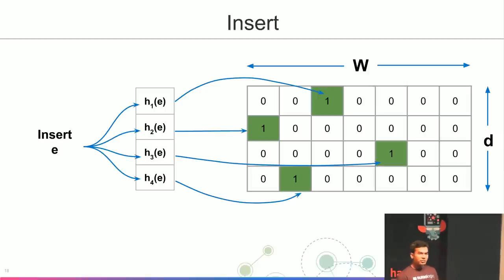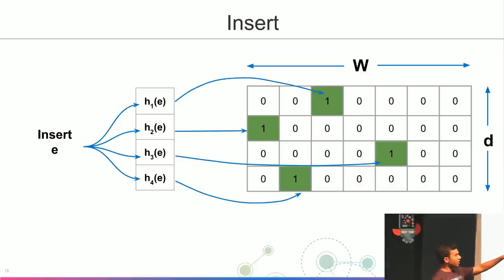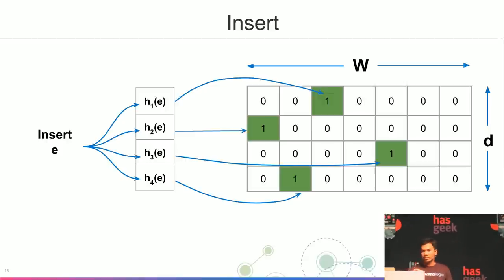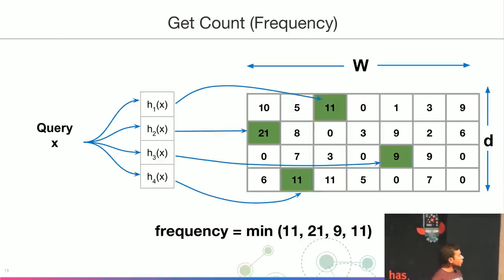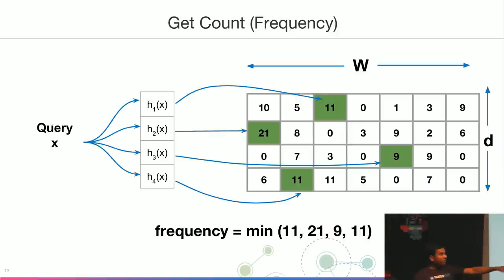For an insert operation, whenever we get element e from the stream, we pass it through the d hash functions, which give us d distinct indices. We go to those indices in the respective bit arrays and increment the value, because we want to track count rather than just setting the bit on. For a query — how many times we have seen x — we pass it through the hash functions, go to those buckets, fetch all values, and the frequency is the minimum of all the values obtained.